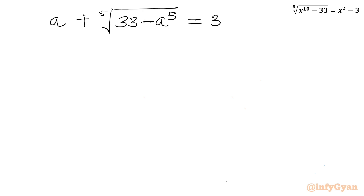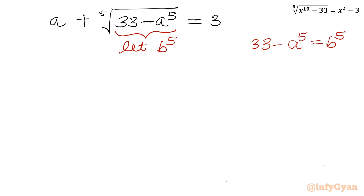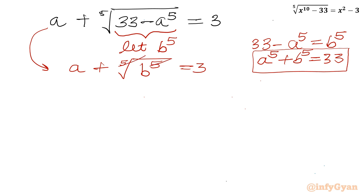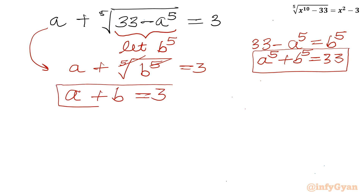This is the conventional form. Now I will use a second substitution: let the 5th root of (33 minus a to the power 5) equal to b, so 33 minus a⁵ equals b⁵, which gives us a⁵ plus b⁵ equal to 33. From the equation, we can write a plus b equal to 3.